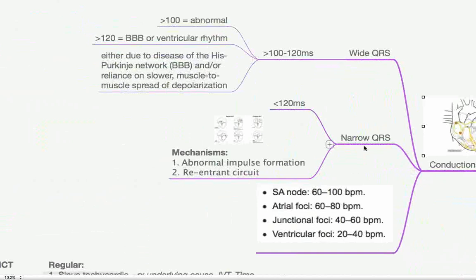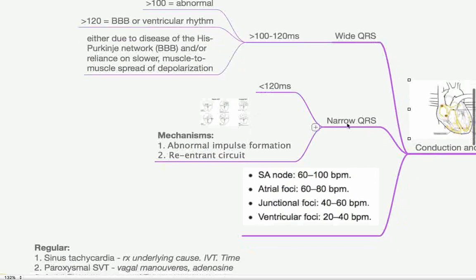So what is a narrow complex? Basically, anything regarding the QRS complex above 100 milliseconds is pretty much abnormal. Above 120 milliseconds is definitely abnormal. Those are three small squares. It could be a bundle branch block or a ventricular rhythm. And we're not really interested in that today. We're looking at narrow QRS. So it's certainly below 120 milliseconds. Just remember that number.